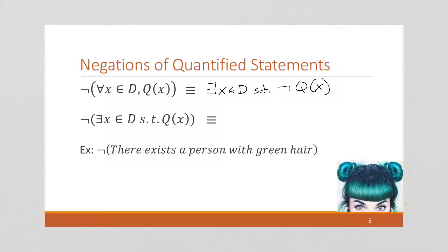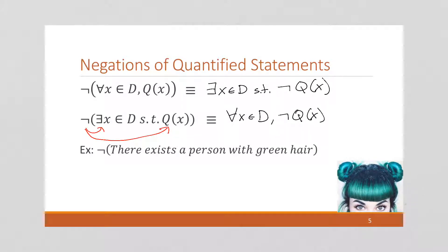We do something similar with an existential statement. That negation sign goes in and flips this to a universal statement, and then it also flips our quantifier. Here's an example: there exists a person with green hair. That's a true statement. But let's take the negation — what would the negation of this be? Let's write it symbolically first.